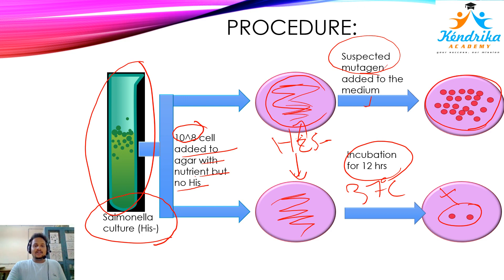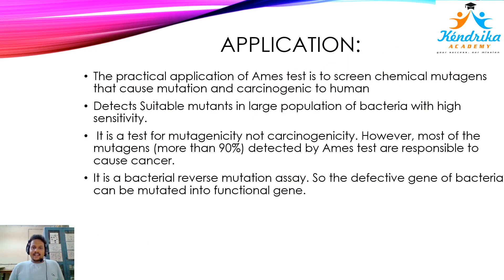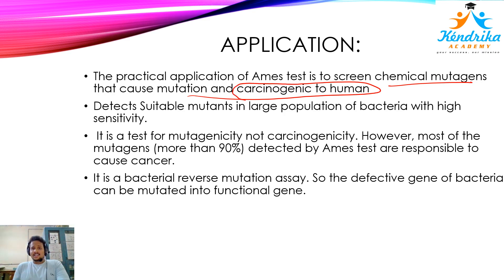After adding your particular chemical, if the bacteria become histidine positive they can grow in histidine-negative medium, which means your chemical is causing mutation. With this procedure you can easily determine whether a particular chemical is a mutagen or not. The Ames test is used to screen chemical mutagens that are mutagenic and potentially carcinogenic to humans. It tests suspected mutagens in large populations of bacteria with high sensitivity.